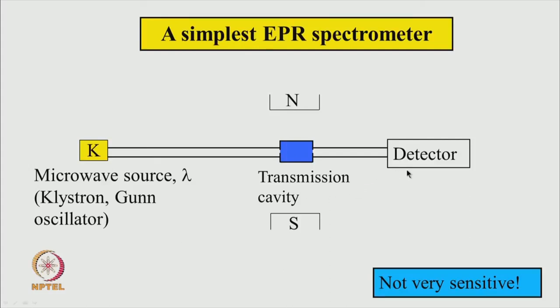This is not a very sensitive spectrometer. As I said earlier, the Q of this transmission cavity is very low. So even though such spectrometers were used earlier, nowadays this type of spectrometer is never used. We almost always use a reflection cavity whose Q is much higher.